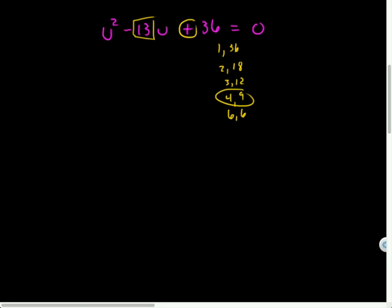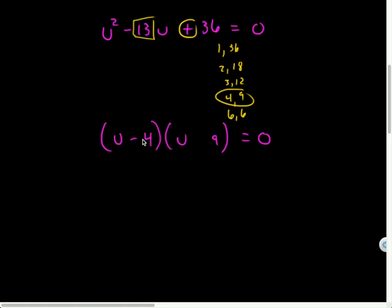So I can factor this to be U with a 4 and U with a 9 equals 0. And what are the signs in this going to be? Double negative. And now what do I do? Set them both equal to 0. I've got two things that multiply to be 0. Therefore, one of them has got to be 0. So I'll get U equals 4 and U equals 9.